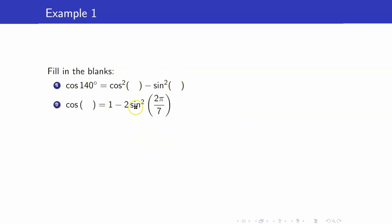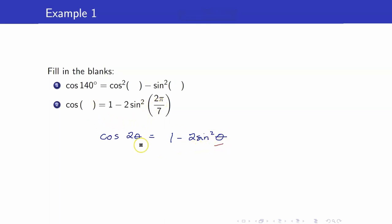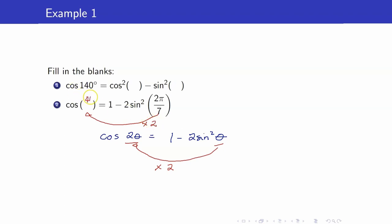For number 2, we have the double angle identity involving sine squared. We want to go from the sine squared expression to the cosine of 2 theta form. Looking at this angle — from theta it became 2 theta, so it got multiplied by 2. Therefore, here we have 2π over 7 times 2, which gives us 4π over 7.